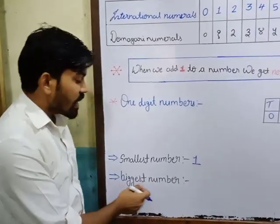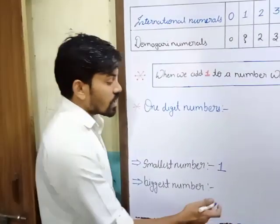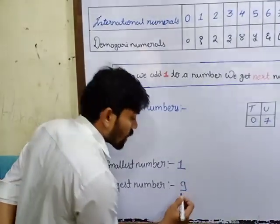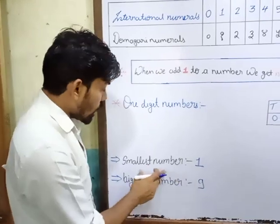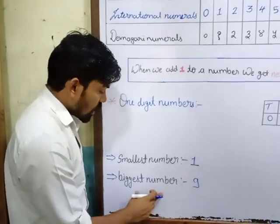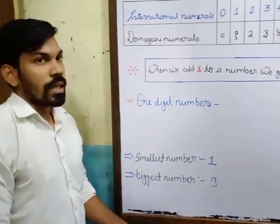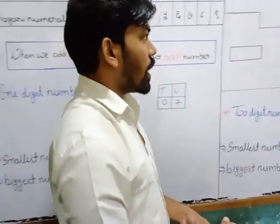The biggest 1-digit number is 9. So, smallest 1-digit number is 1, and biggest 1-digit number is 9. Let's move ahead.